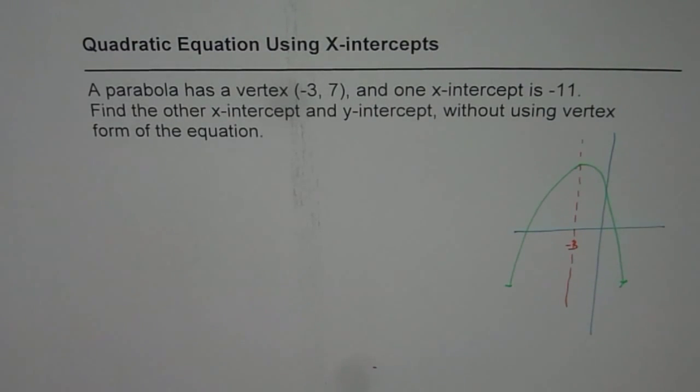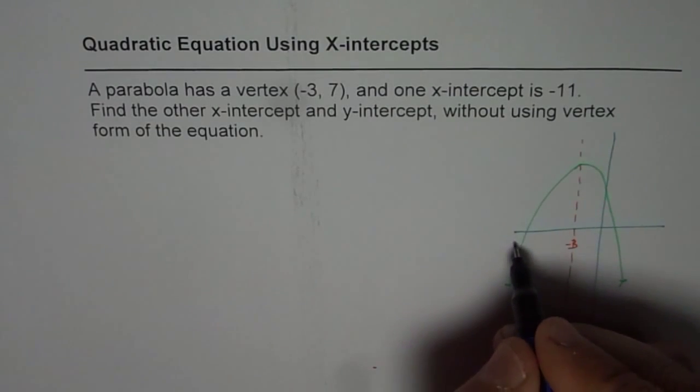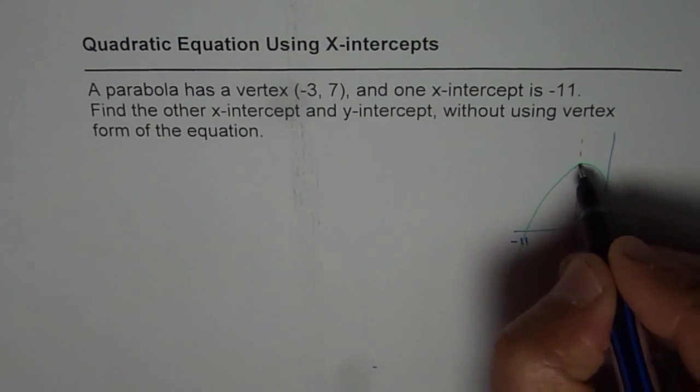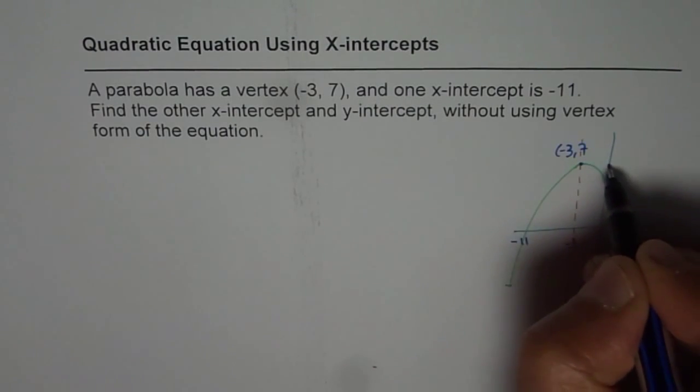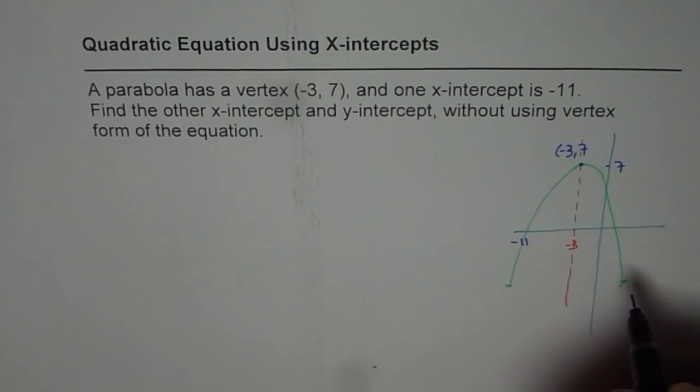Now let me first sketch a rough diagram here and then we will just try to solve it, okay? So in this particular case what we know is that one of the x-intercepts is -11. X is here going through -3 and 7, right? So this is why value is 7 for us.